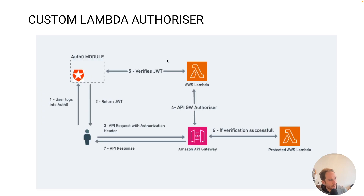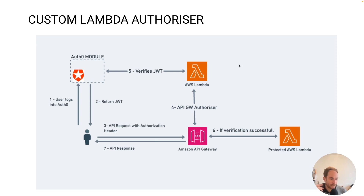The next service is the custom Lambda authorizer. If you want to integrate authorization from a third party — such as Auth0 — or your own private authorization service, you can configure a Lambda function in the API Gateway to verify the credentials. In my example I'm passing a JWT to Auth0, and if verification succeeds the user gets the response from the protected Lambda function. Since you can use any Lambda function here, there's no limit to what you can integrate — making this a very powerful use case for custom authorization within API Gateway.